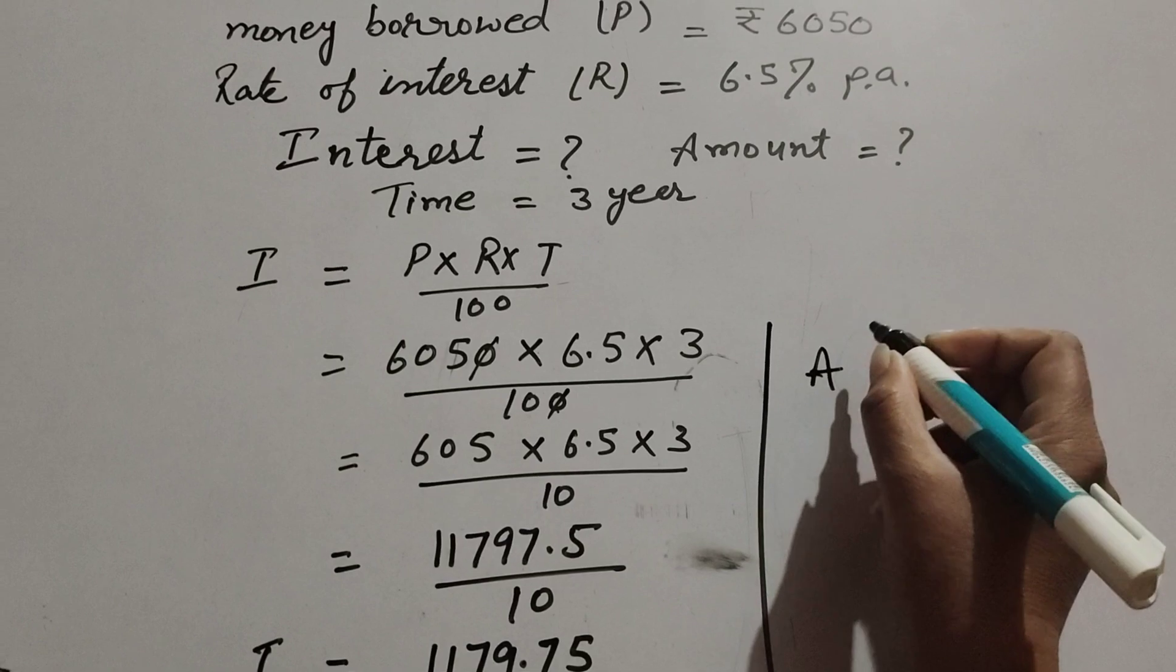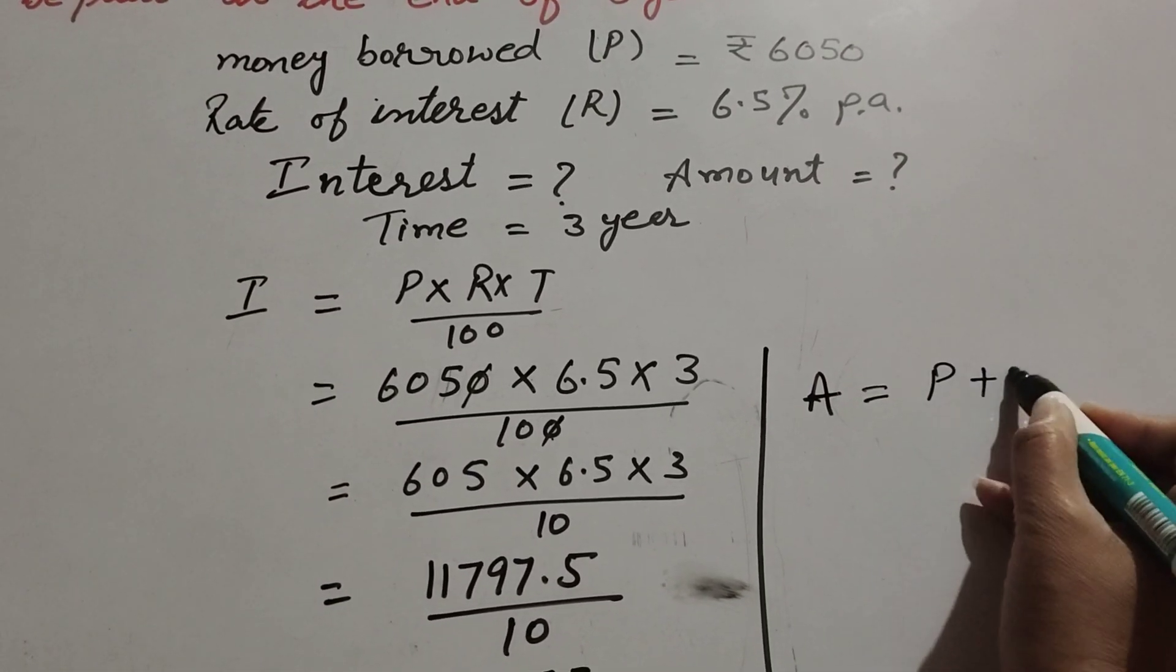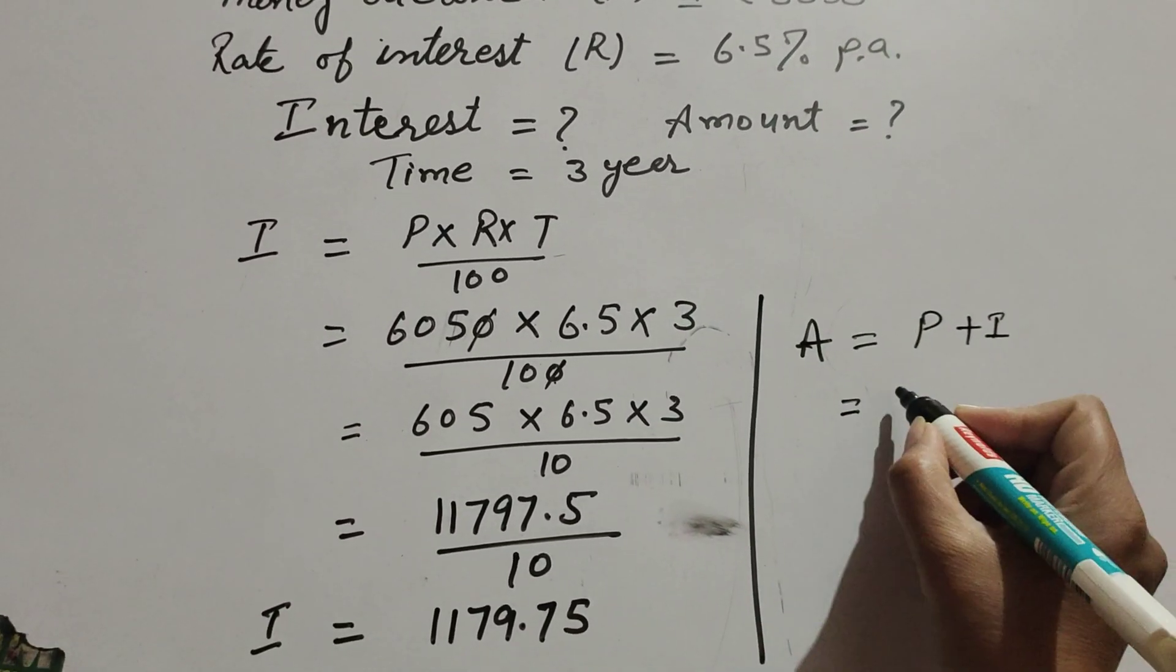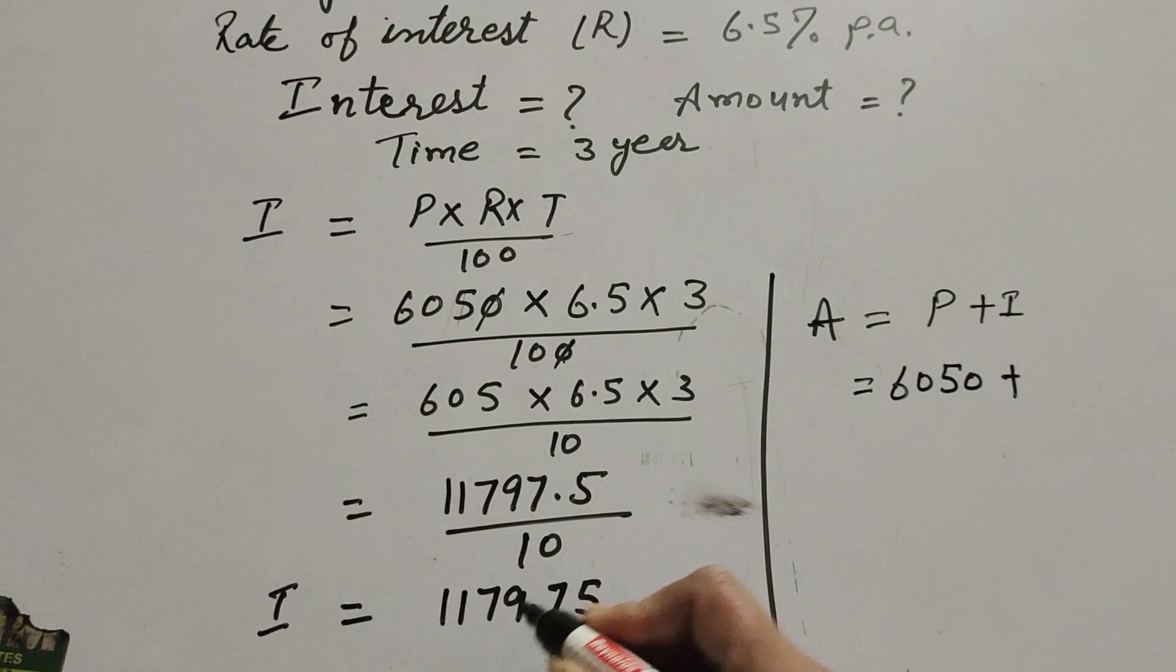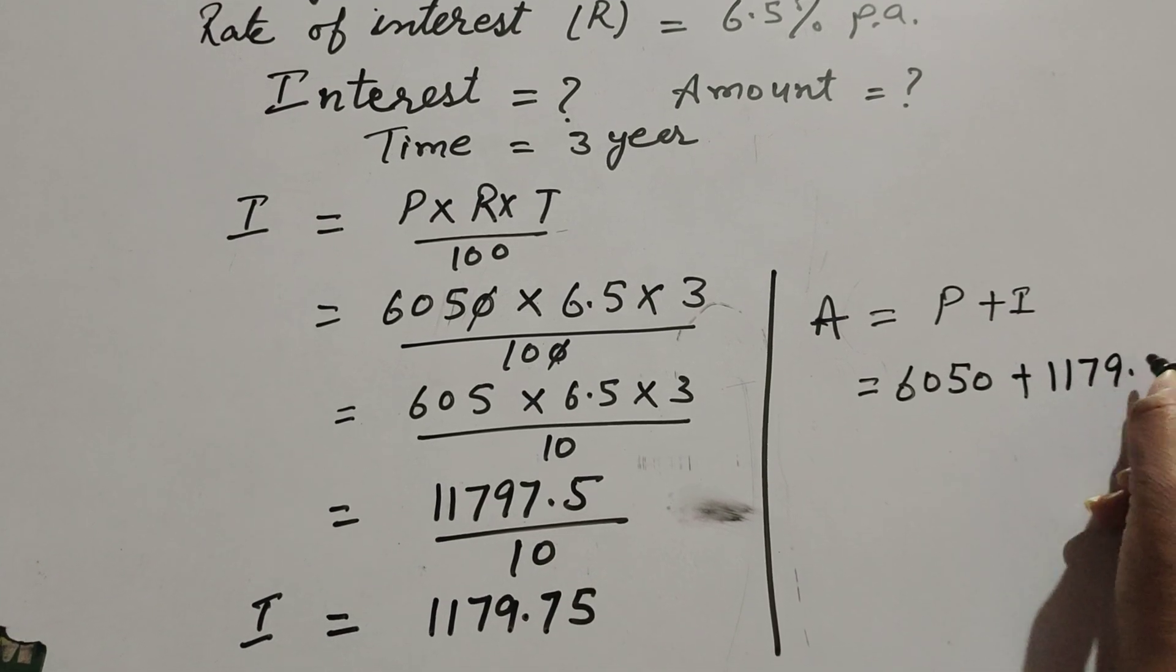Now we find the amount, total amount paid at the end of three years. It is principal plus interest. Principal is 6050 plus interest, interest is 1179.75.